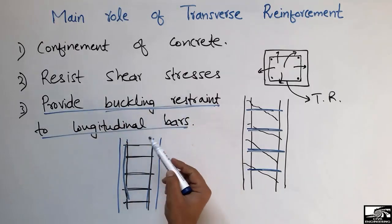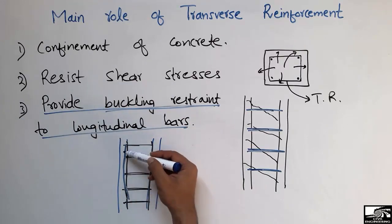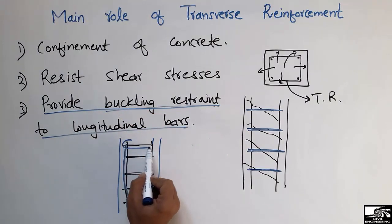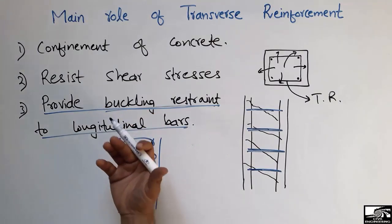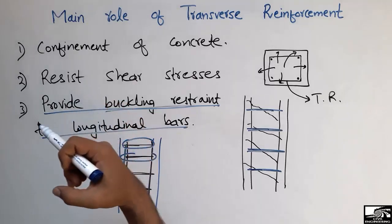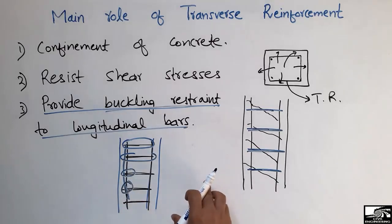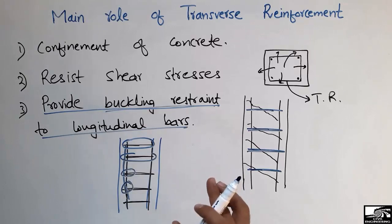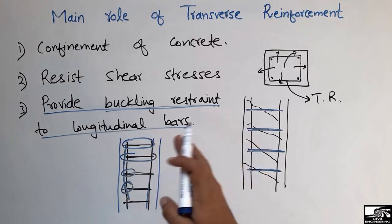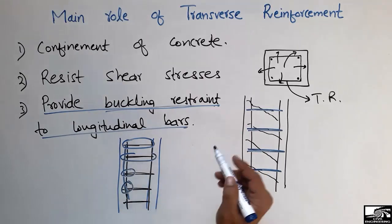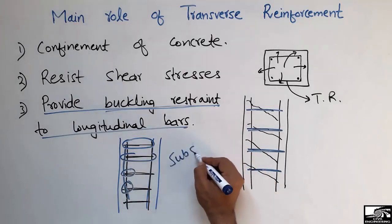The longitudinal bars buckle under high load and the column can collapse due to this buckling. The transverse reinforcement tries to capture and resist this, providing buckling restraint. These were the three main purposes for providing transverse reinforcement. They also mainly resist lateral or earthquake forces, which cause shear stresses.